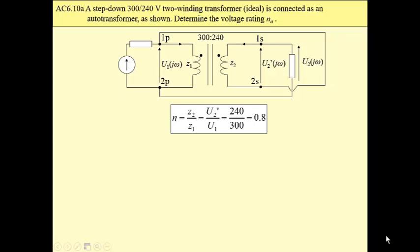A step-down 300 to 240 volt two-winding transformer is connected as an auto-transformer. For this two-winding transformer, we have a turn ratio of 0.8.